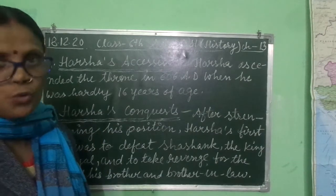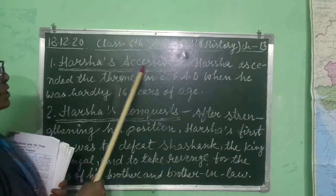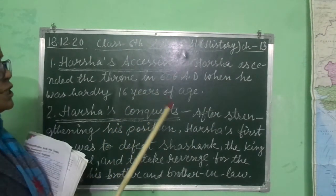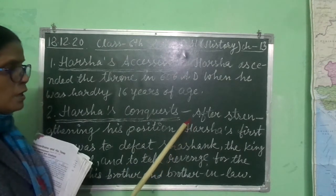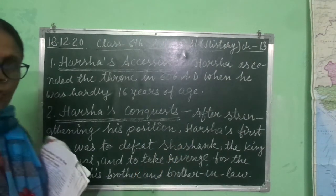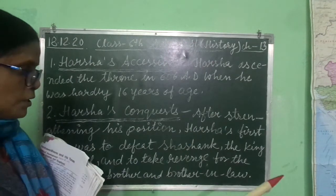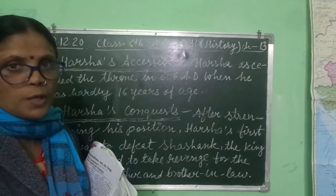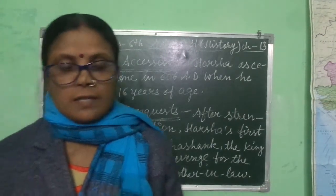Today we will discuss the first two topics: first, Harshvardhan, and second, Harshvardhan's Conquest. Harshvardhan ascended the throne in 606 AD when he was hardly 16 years of age. After strengthening his power and position, Harshvardhan's first task was to defeat Shashank, the ruler of Bengal, and to take revenge for the death of his brother and brother-in-law. So let's start Chapter 13 — Harshvardhan and His Time. Open your book, page number 89.